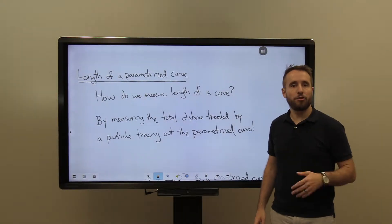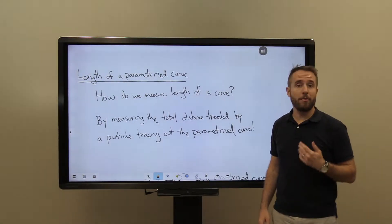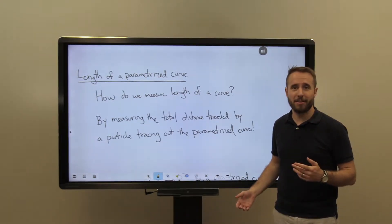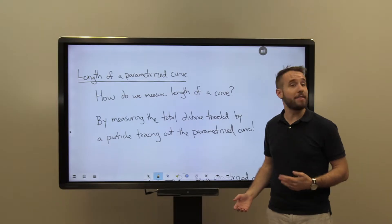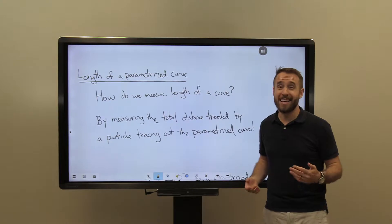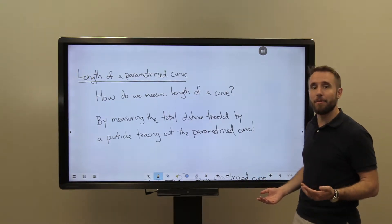Last time we looked at how to take the derivative of parametrized curves and we saw how we could take those derivatives and use it to measure important things like the velocity of our curve and the speed of our curve, meaning the speed and velocity of the curve as it's being parametrized in that given moment in time.